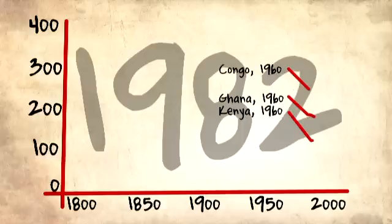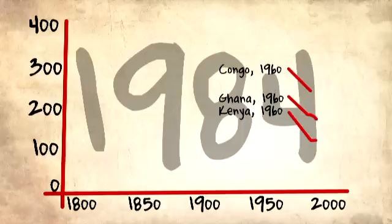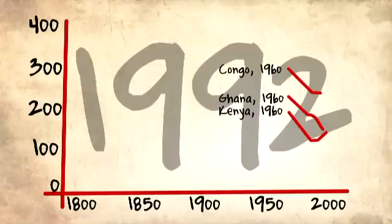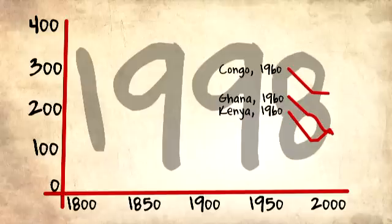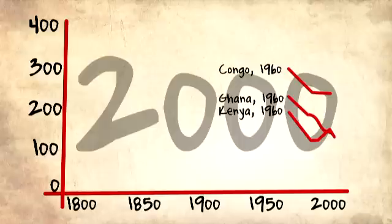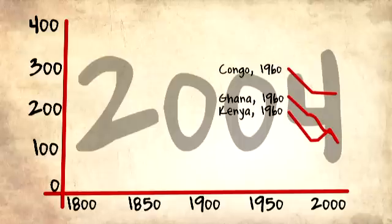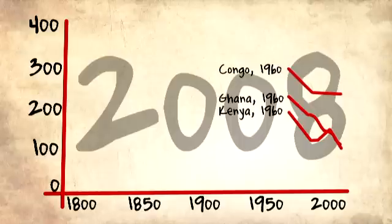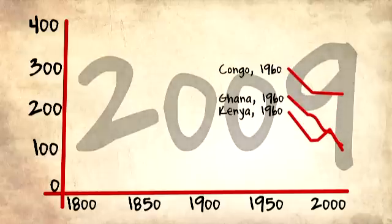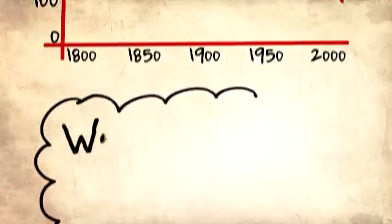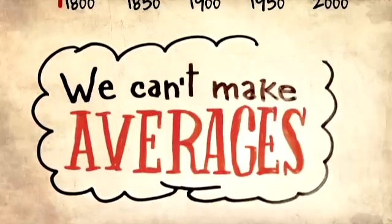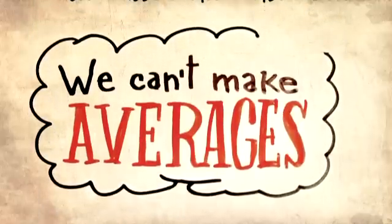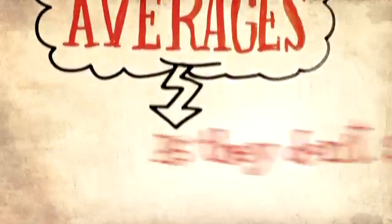But then in the 80s, Congo got into civil war and they leveled off. Ghana improved very fast. There was a backlash in Kenya, and Ghana bypassed it. Then Kenya and Ghana go down together, while Congo is still standing still. That's where we are today. You can see it doesn't make sense to average zero improvement and very fast improvement together.